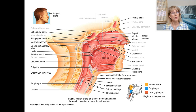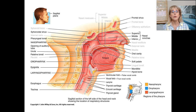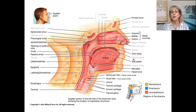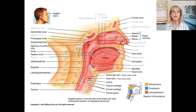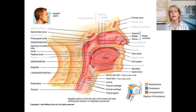You have more than one set of tonsils — that might surprise you. The tonsils you think of when you ask 'are my tonsils big?' are the palatine tonsils. You also have a tonsil way back behind the base of your tongue called the lingual tonsil, and you have a tonsil up in your pharynx called the pharyngeal tonsil. The pharyngeal tonsils are also known as your adenoids — an older term that some people still use.